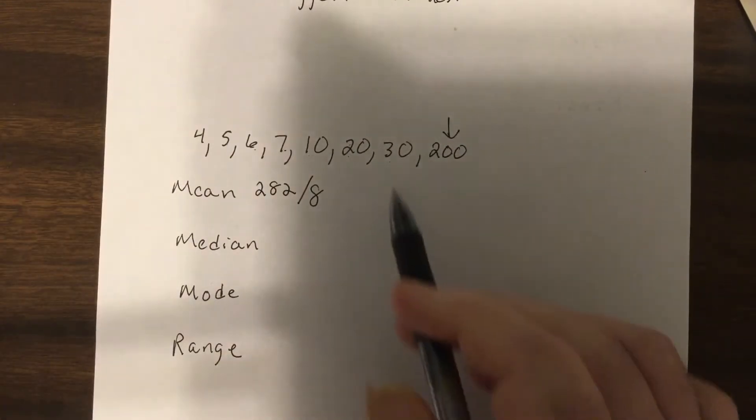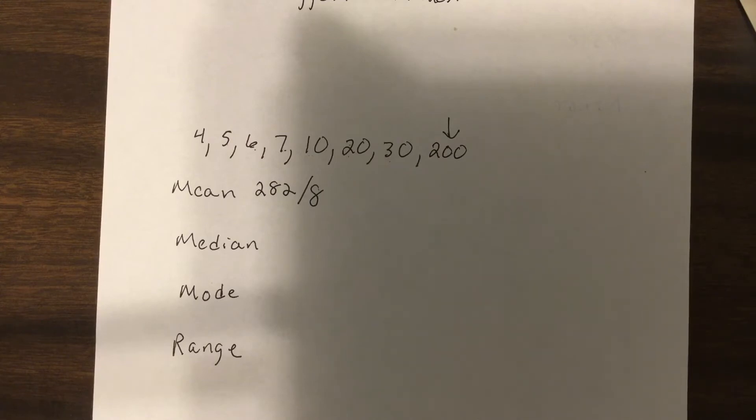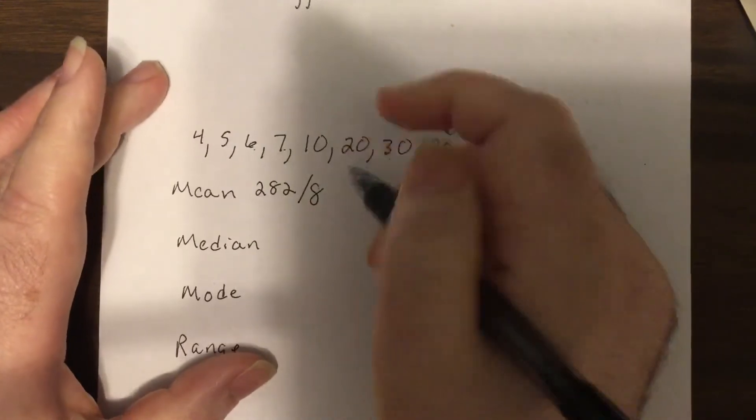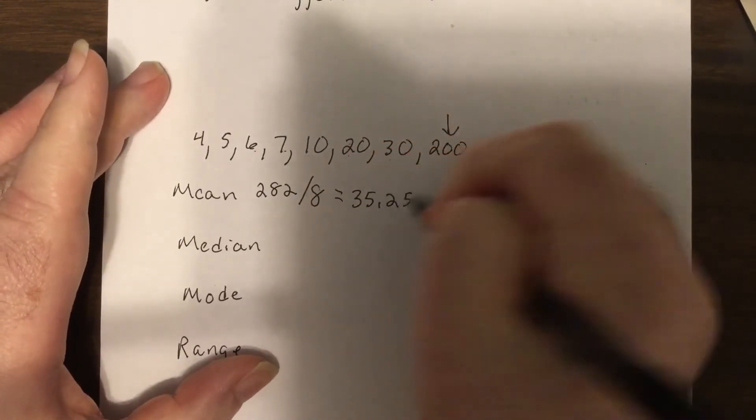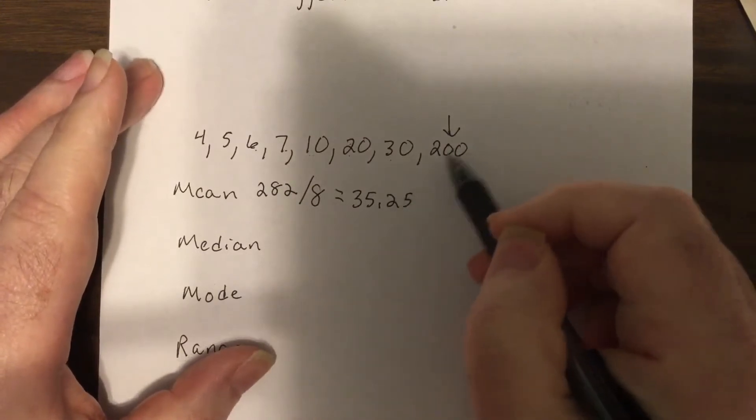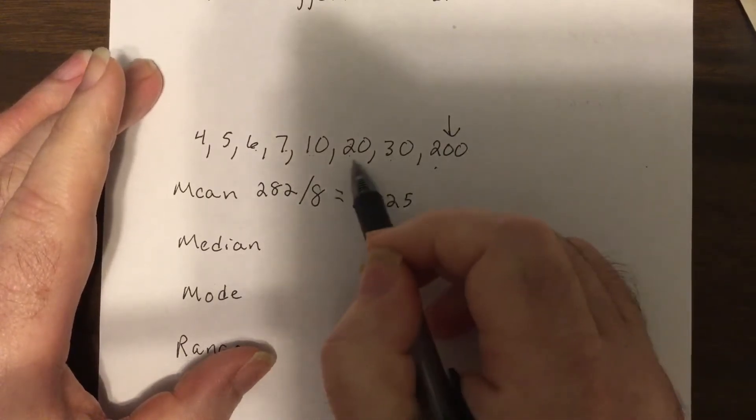Divided by 1, 2, 3, 4, 5, 6, 7, 8. Now notice 200 is gonna skew this data because most of the numbers are pretty small. So I would have 282 divided by 8 and it says it's 35.25.